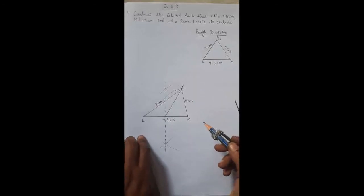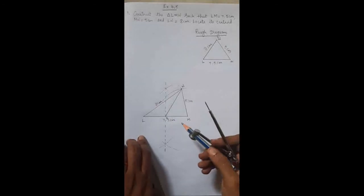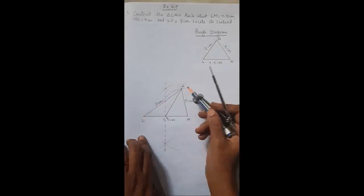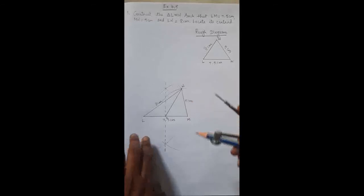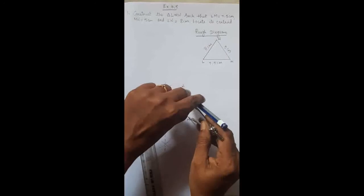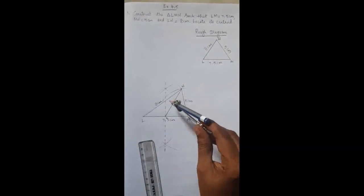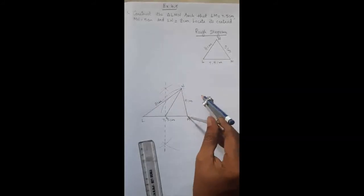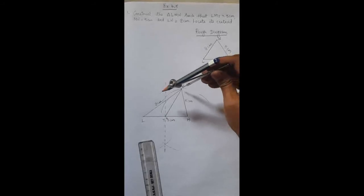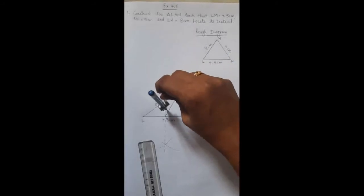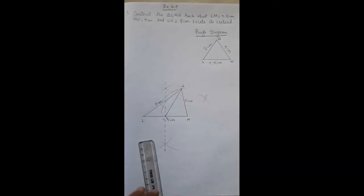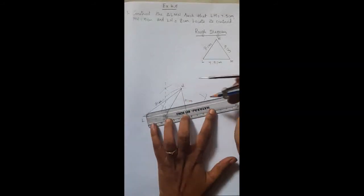Now construct the perpendicular bisector for side MN. Take more than half of MN. With M as center, draw arcs above and below. Then for the same radius, with N as center, draw arcs above and below. Join these two points of intersection.